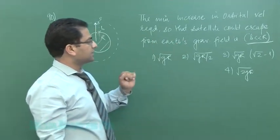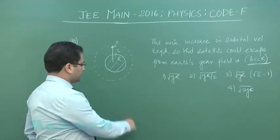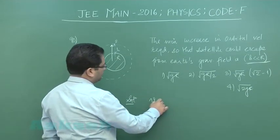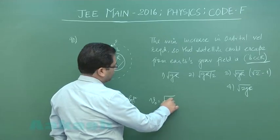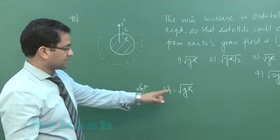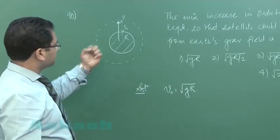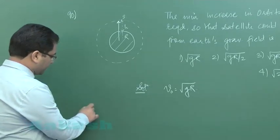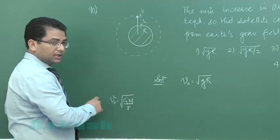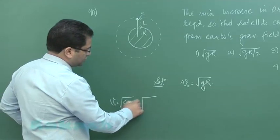It asks for the minimum increase in orbital velocity so that the satellite could escape from Earth's gravitational field. The question is directly formula-based. The orbital velocity is √(gr), which comes out when it's revolving at a height very close to the surface.